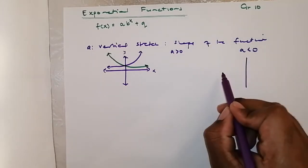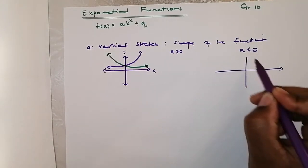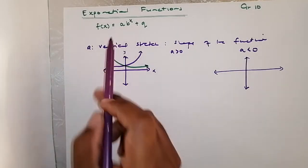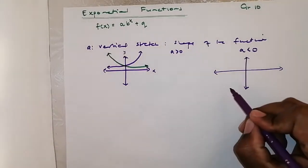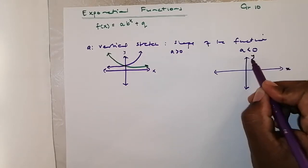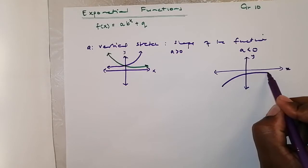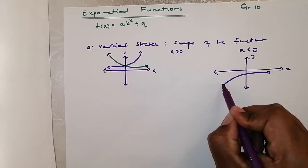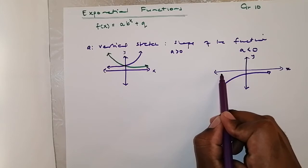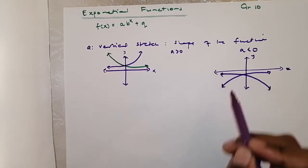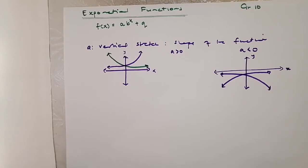If 'a' is less than zero, the function will be reflected — it will look like a downward-facing exponential curve. So basically, 'a' determines the shape of the graph.